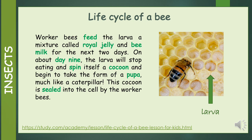Now that the larvae has hatched, the worker bees feed the larvae a mixture of royal jelly and bee milk for the next two days. On about day 9, the larvae will stop eating and spin itself a cocoon and begin to take the form of a pupa, much like a caterpillar. This cocoon is sealed into the cell by the worker bees.